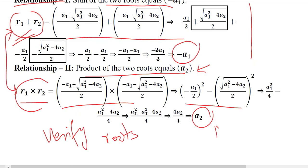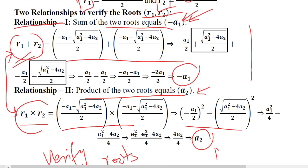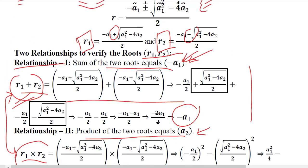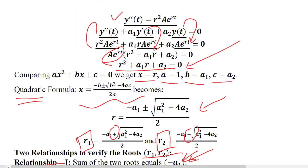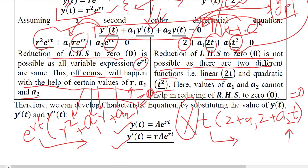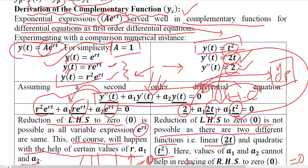So here you can use the numerical examples that we have solved for particular integral Yp and you can see that the sum of the roots would be equal to minus A1 and the product of the roots would be equal to A2. And this can be a good exercise for you to verify that how we can check if the roots are correct.